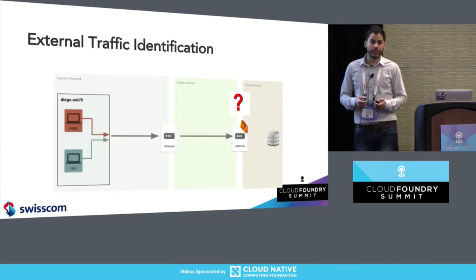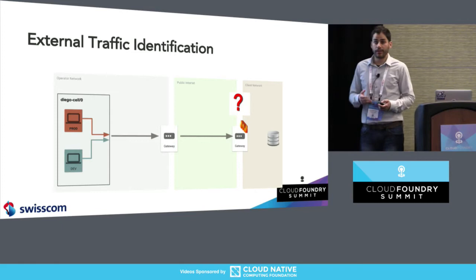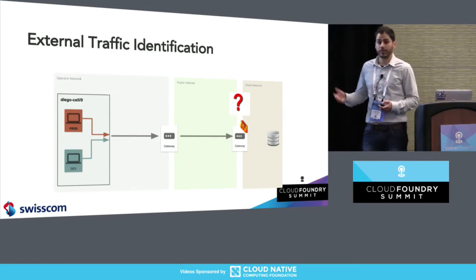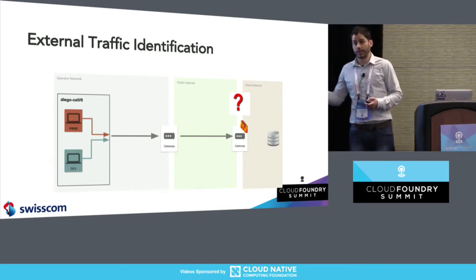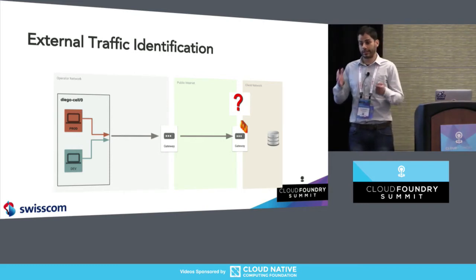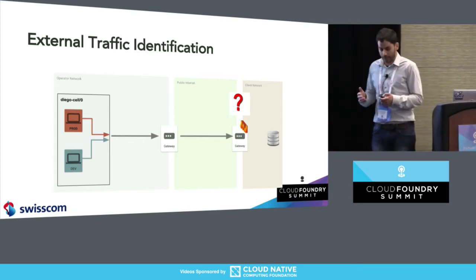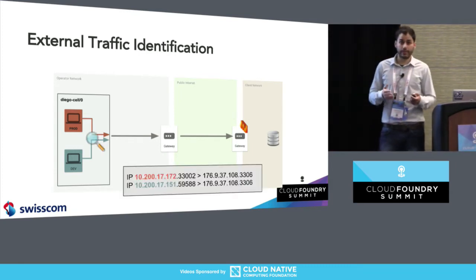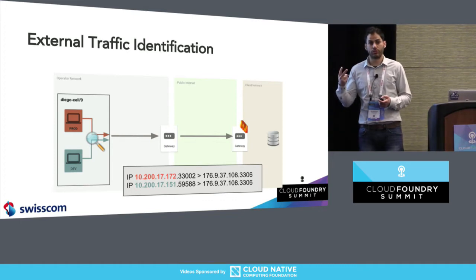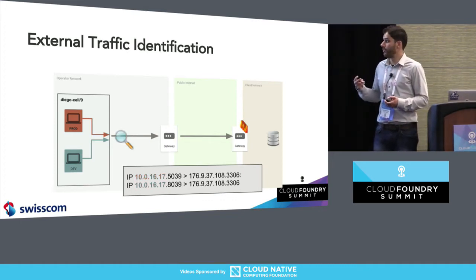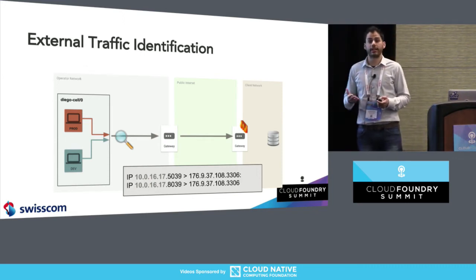The problem we're going to solve is called external traffic identification. If two apps are running in the same Diego cell and these apps are trying to speak to an external service, the service owner cannot identify the traffic — cannot say that this traffic comes from a production app or from a non-production app. Inside the Diego cell we can see two source IP addresses and it's easy to map. But once we go outside the Diego cell, the traffic has been masked, so we only see the external IP of the Diego cell.